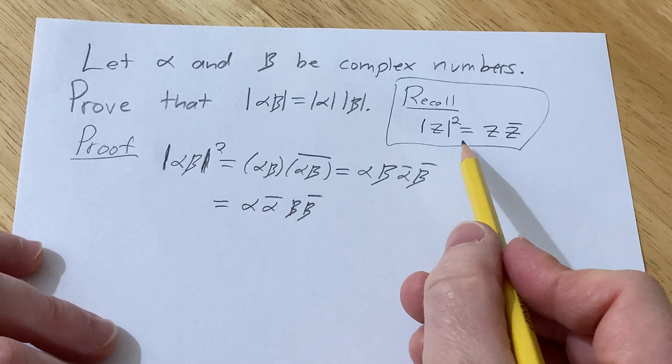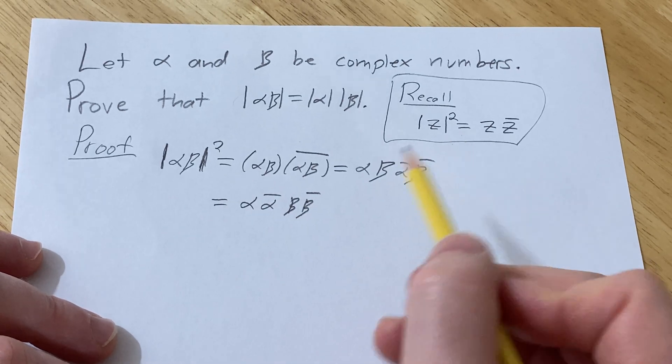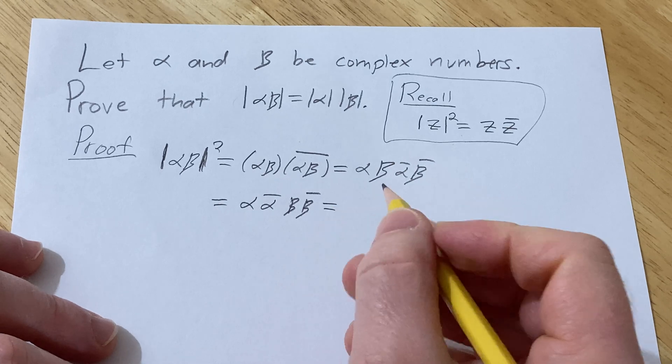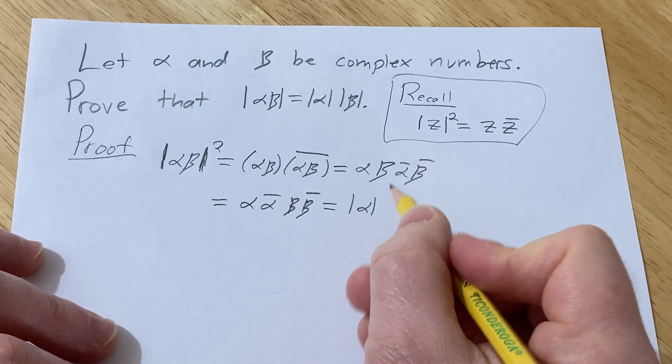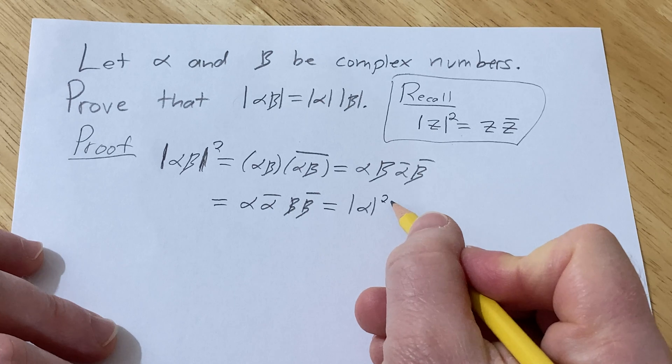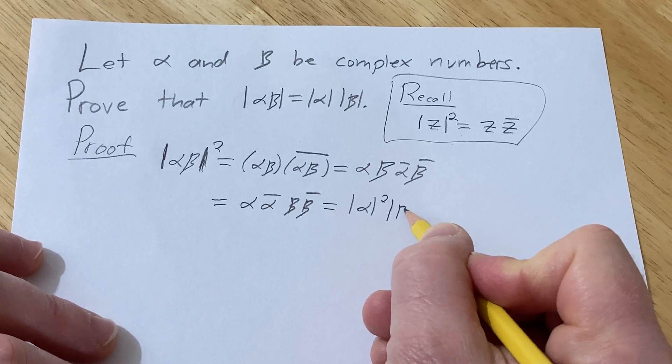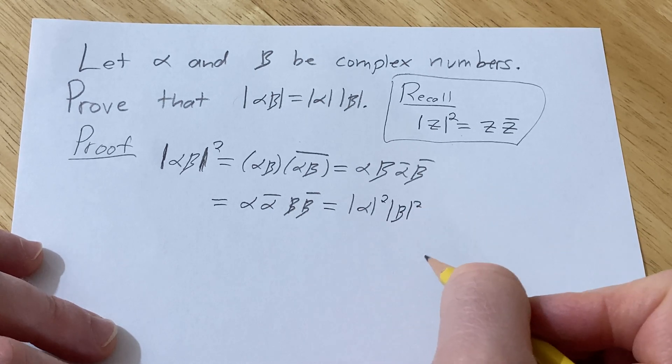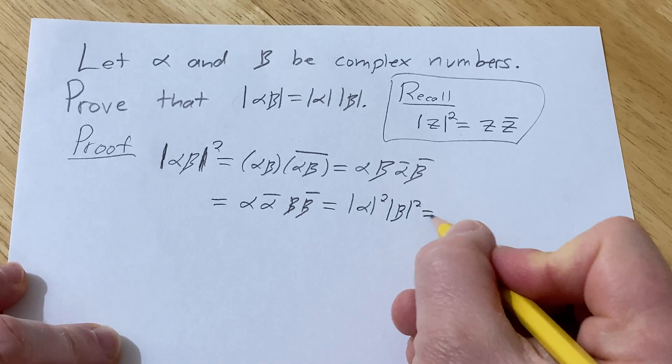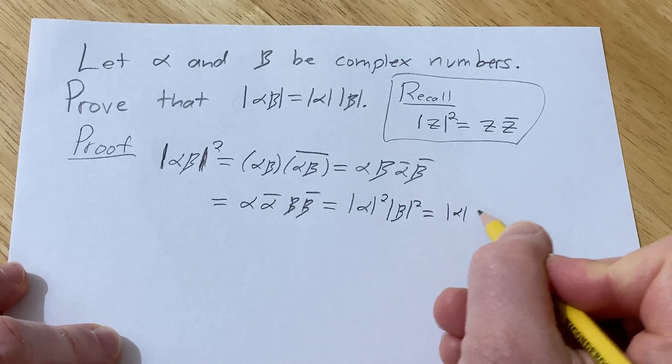And so now we can invoke our super powerful formula once more and write this as the modulus of alpha squared times the modulus of beta squared.